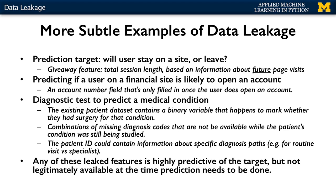Another example in the same patient dataset might involve the form of the patient ID. The ID might be assigned depending on a particular diagnosis path — for instance, it could be different if it's the result of a visit to a specialist where the initial doctor determined the medical condition was likely. This illustrates the fact that there are many different ways data leakage could occur in a training set, and in fact it's often the case that more than one leakage problem is present at once. Sometimes fixing one leaking feature can reveal the existence of a second one.